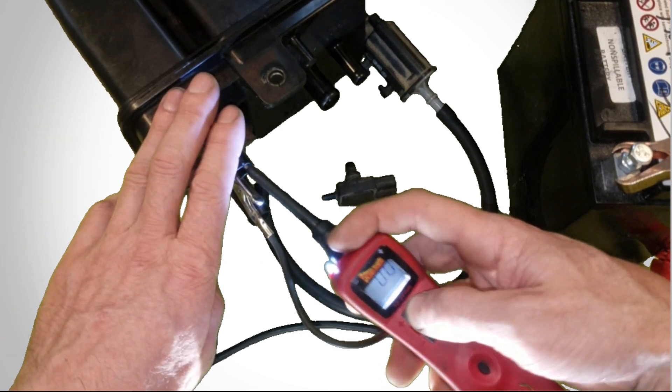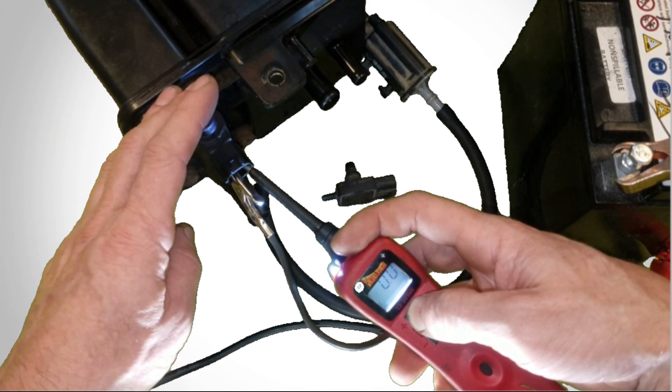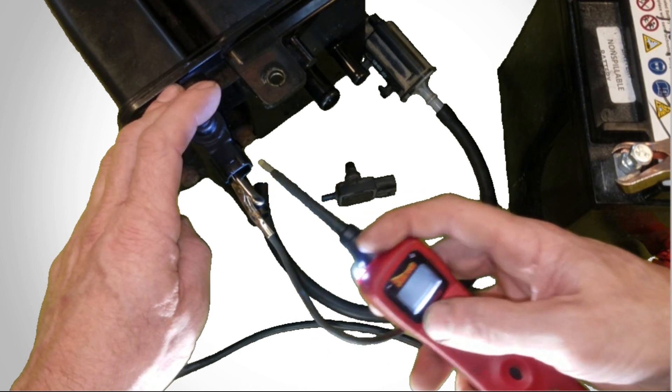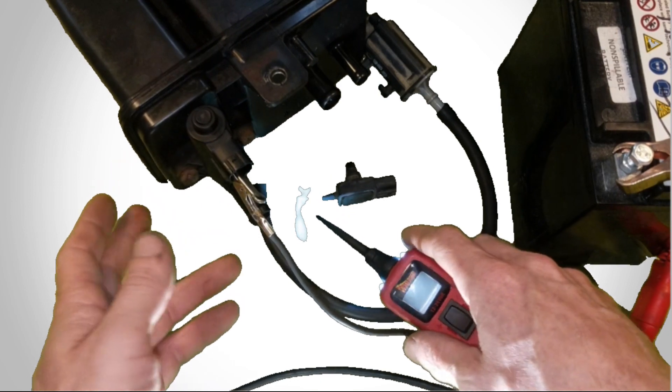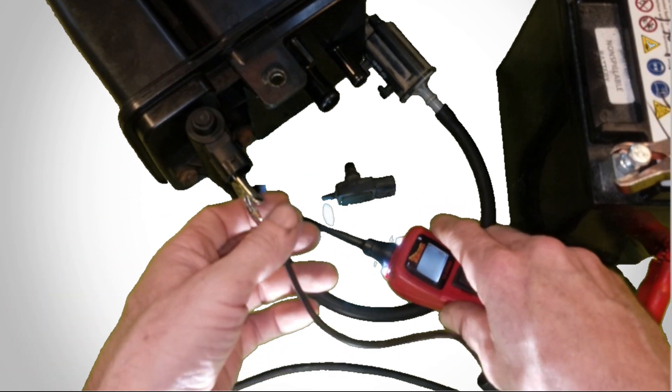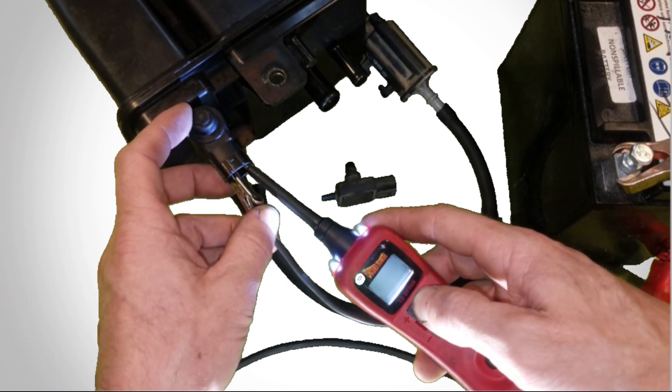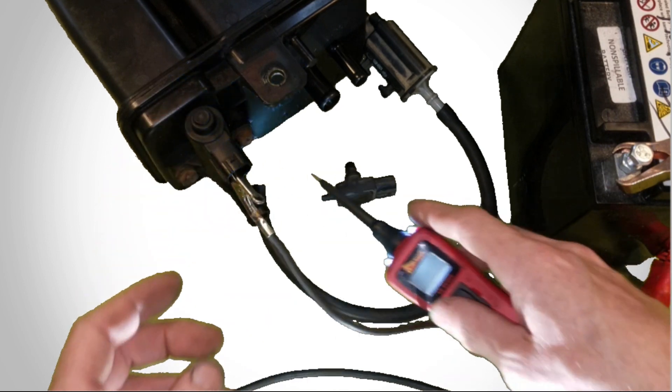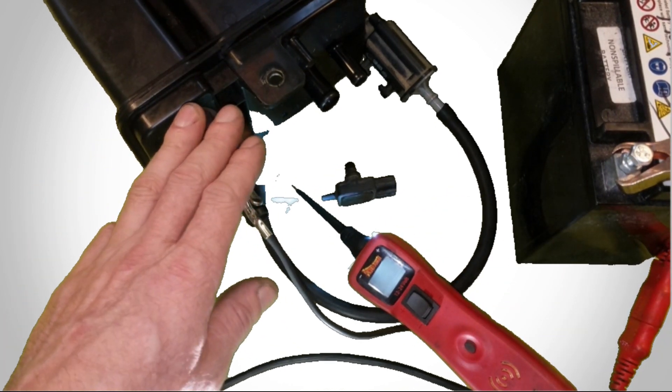Typically when you have a large EVAP system leak, this is going to be the first thing you want to go after. Find where your valve is at, pull it out and just bench test it. Put power to it, even if you have to run two wires from a little battery like I have here to the valve itself, power it up, see if it holds vacuum or holds pressure.